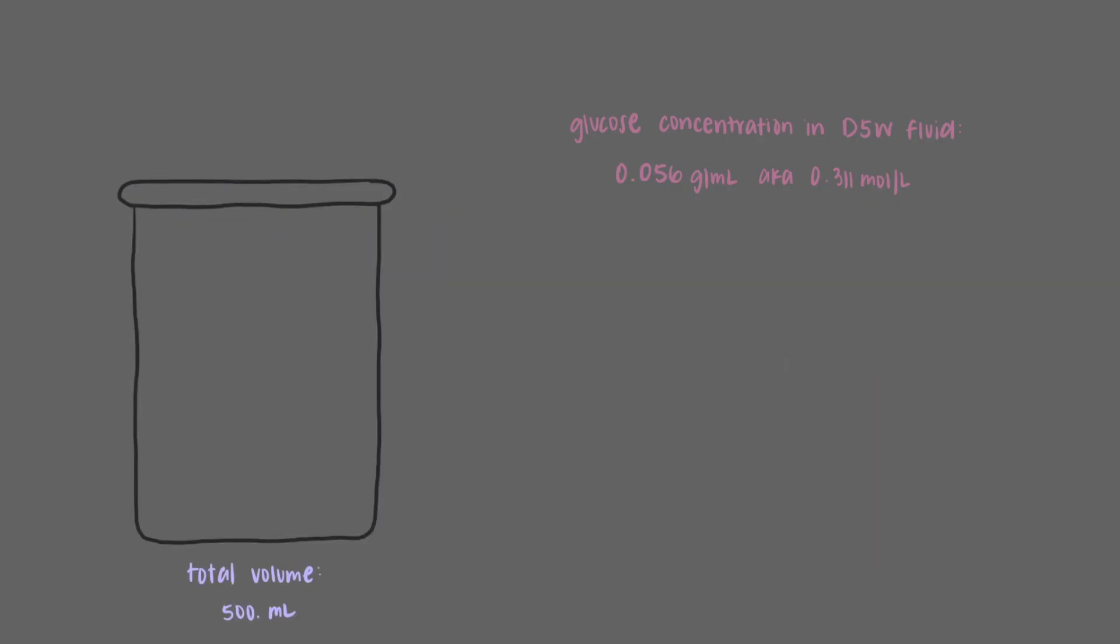We'll start with volume again. This time we're given the volume in milliliters, but molarity contains units of liters, so we have to convert milliliters into liters. 500 milliliters is 0.500 liters, so we'll start with this. Once again we'll use the concentration given in moles per liter to cancel out the liter units and to leave us with the number of moles of glucose.